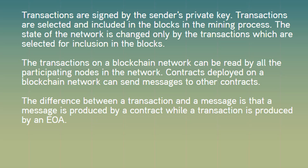Transactions are signed by the sender's private key. Transactions are selected and included in the blocks in the mining process. The state of the network is changed only by the transactions which are selected for inclusion in the blocks. The transactions on a blockchain network can be read by all the participating nodes in the network. Contracts deployed on a blockchain network can send messages to other contracts. The difference between a transaction and a message is that a message is produced by a contract, while a transaction is produced by an EOA.